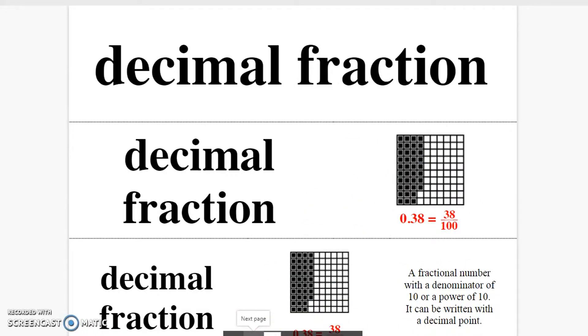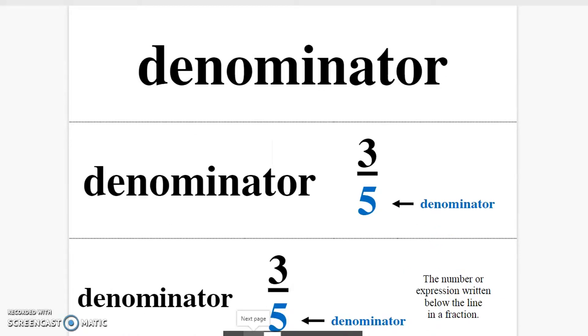Decimal fraction. A fractional number with a denominator of 10 or a power of 10. It can be written with a decimal point. Denominator. The number or expression written below the line in a fraction.